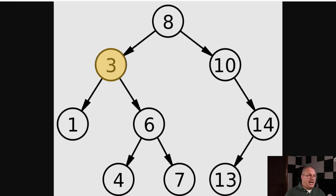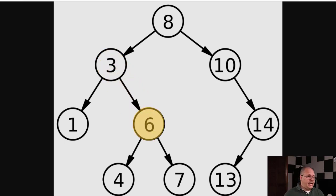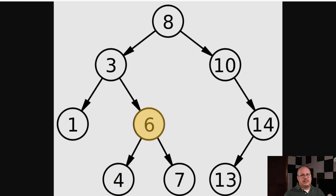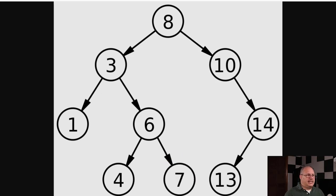Now that I'm done with the left-hand side, I print three — so I have one and three. Then I check: can I go right? I can, I go to six. Can I go left? I can, it's four. Four has no children, so I print four, check right, then move up and print six. I go right to seven, then check left and right. This is the basic in-order traversal algorithm: always go left first, print the current node, then go right.